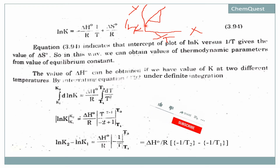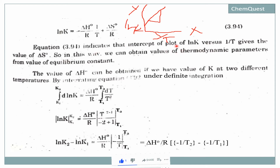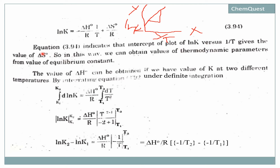From the intercept — where the straight line meets the y-axis — the equation of the plot of ln K versus 1/T gives the value of ΔS°. So from the intercept, you can read off the value of ΔS°.